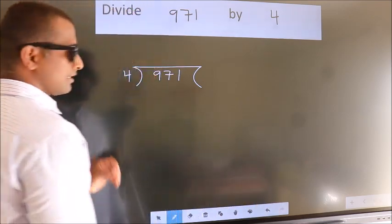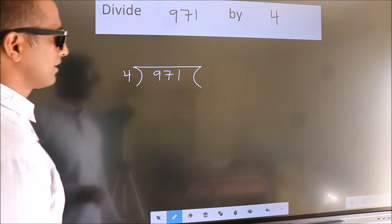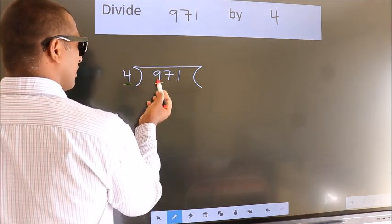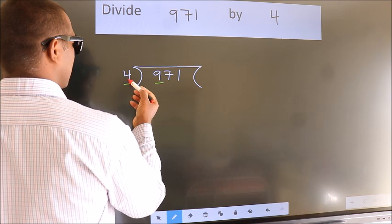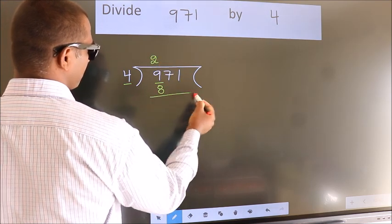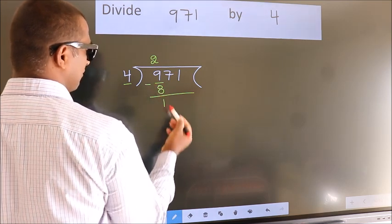This is your step 1. Next, here we have 9, here 4. A number close to 9 in 4 table is 4 twos, 8. Now, we should subtract. We get 1.